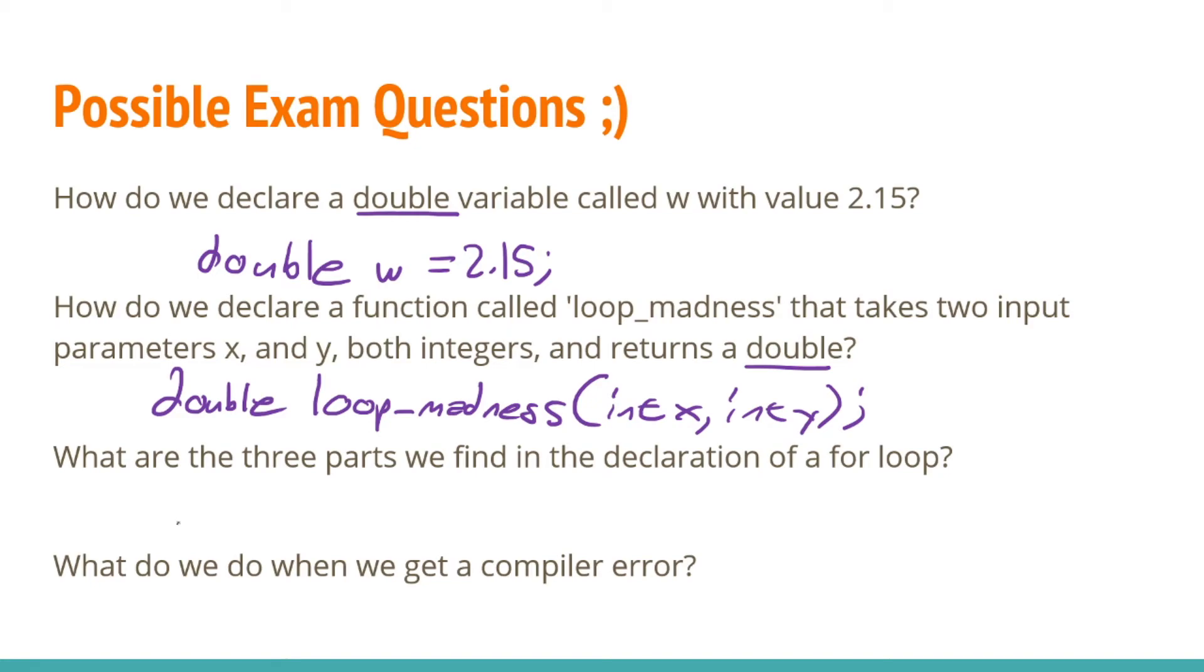What are the three parts we find in the declaration of a for loop? We open it up with parentheses, and we will have our first, which is the variable declaration. An example of variable declaration would be int x. Then we will have a semicolon to separate a declaration from the next statement.